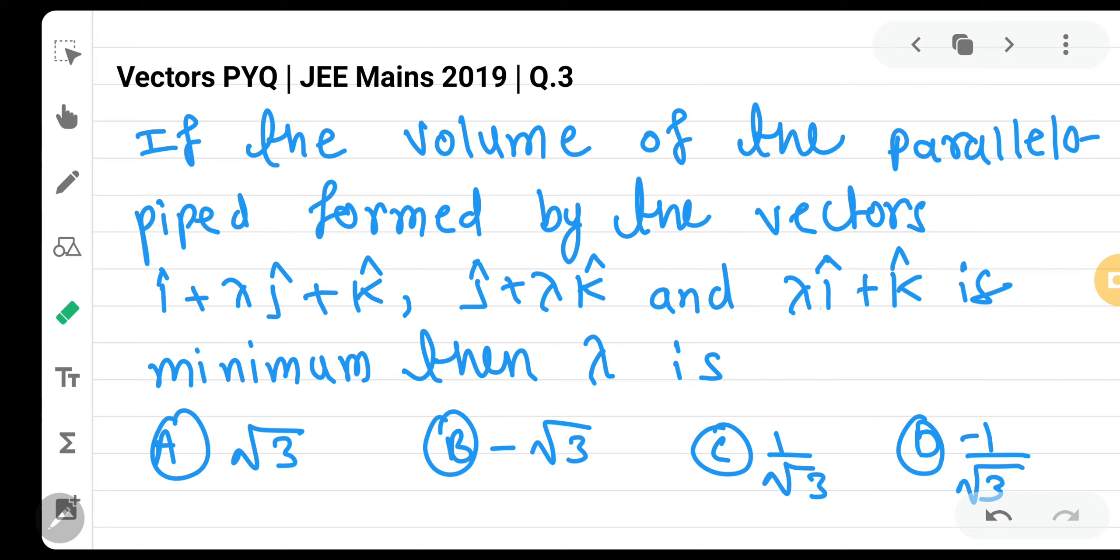So the question goes like this. If the volume of the parallelepiped formed by the vectors i cap plus lambda j cap plus k cap, j cap plus lambda k cap, and lambda i cap plus k cap is minimum, what should lambda be? These are the four options.